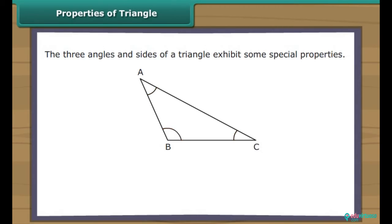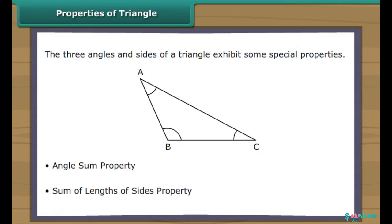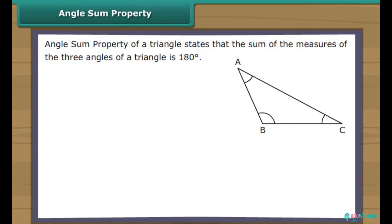The three angles and sides of a triangle exhibit some special properties: the angle sum property and the sum of lengths of sides property. Angle sum property of a triangle states that the sum of the measures of the three angles of a triangle is 180 degrees. In the figure, angle A plus angle B plus angle C is equal to 180 degrees.